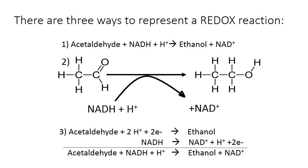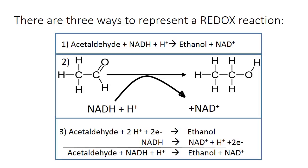There are three ways of representing redox reactions, which are shown here. This is the same reaction written in all three ways. The reactants are acetaldehyde, NADH, and a proton. The products are ethanol and NAD+.